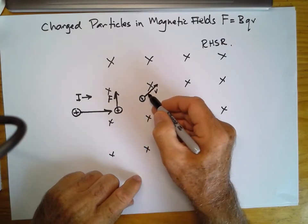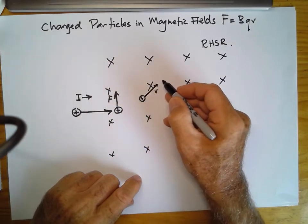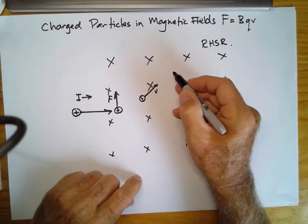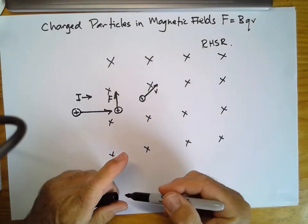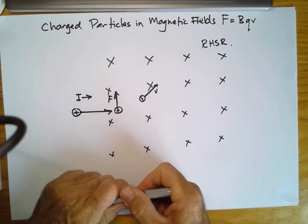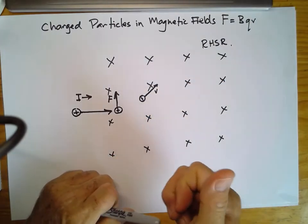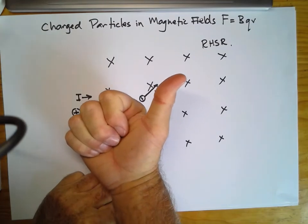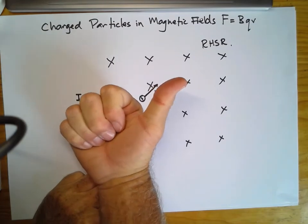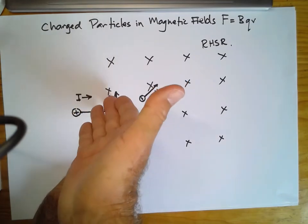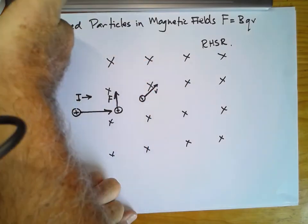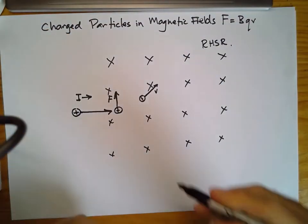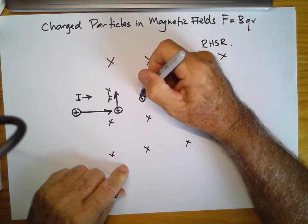A positive particle moving in this direction is equivalent to a conventional current moving in that direction. Using the right-hand slap rule again: current going in this direction, magnetic field into the page — the force must be this way.